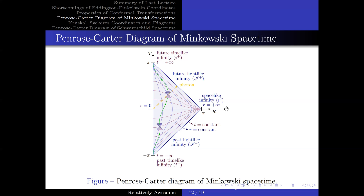Moreover, there is another point of interest called I⁰, corresponding to small t equals constant and small r equals plus or minus infinity. This is called spatial infinity, and in the capital R–T plane it corresponds to capital T equals 0 and capital R equals π.